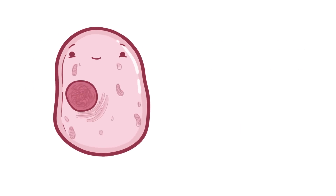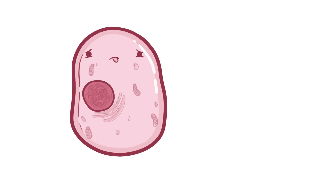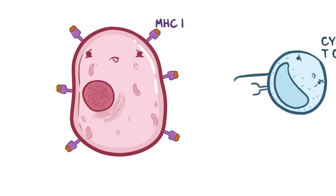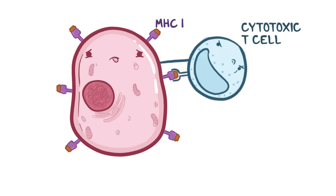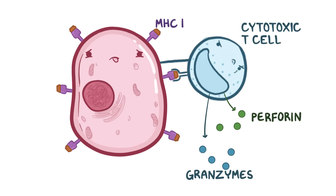Typically, when a cell becomes infected with viruses or mutated by cancer, antigens from inside this cell will be presented on MHC-1 molecules, which are found on all nucleated cells in the body. A specific cell of the immune system called a cytotoxic T cell would use its receptor to bind to the MHC-1 molecule, causing it to release its payload of perforin and granzymes. Perforin perforates the target cell by forming pores, allowing granzymes to enter the cell. Once inside, the granzymes induce apoptosis, or programmed cell death.